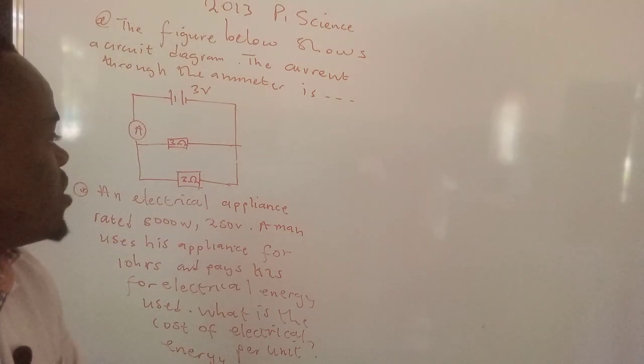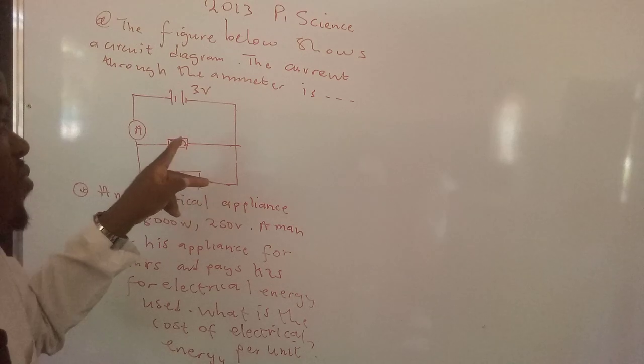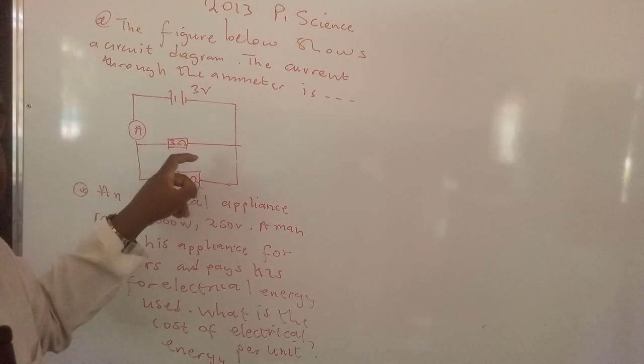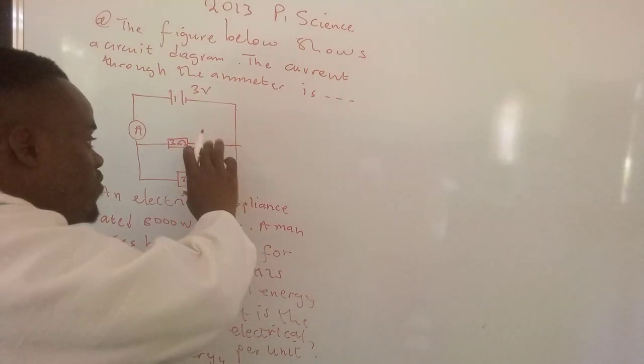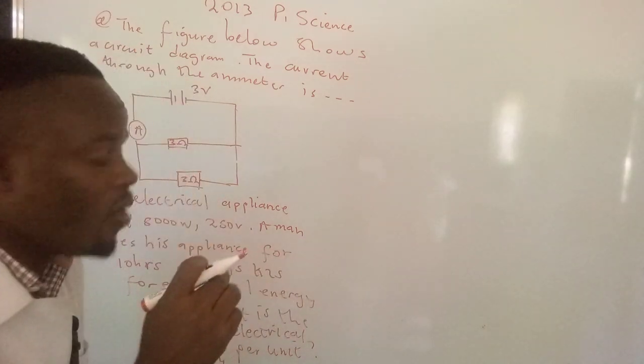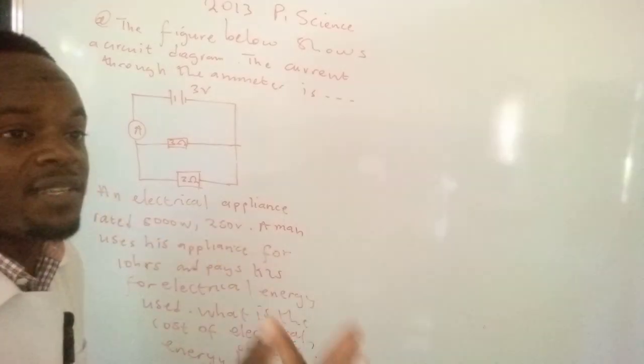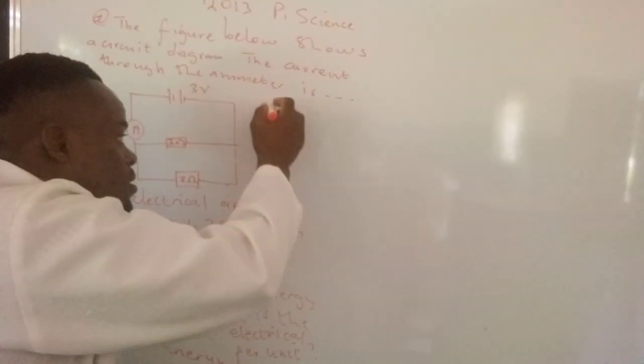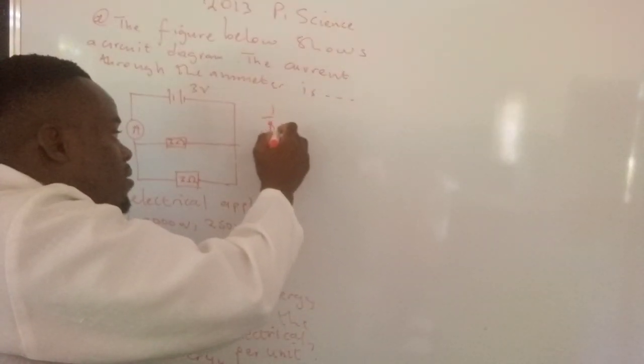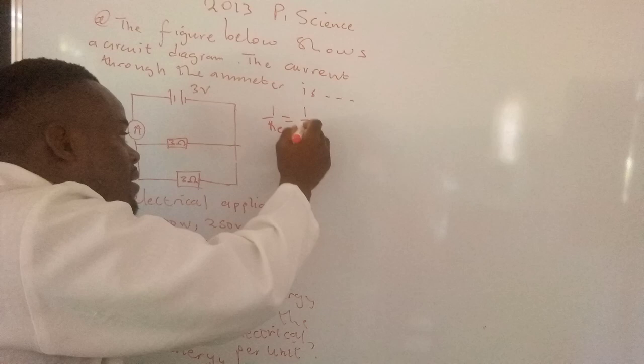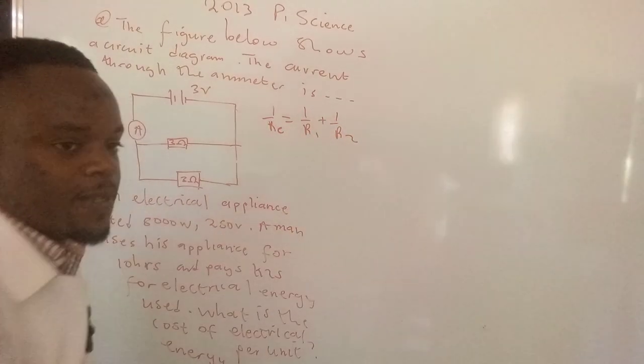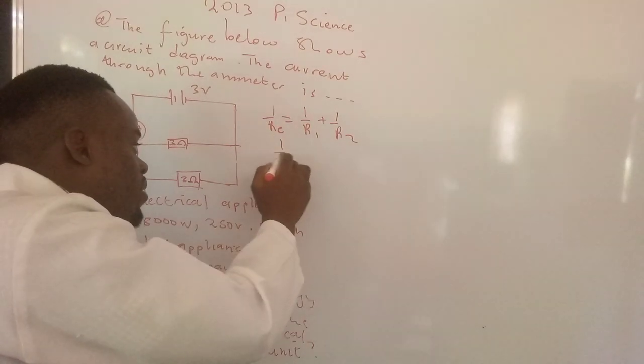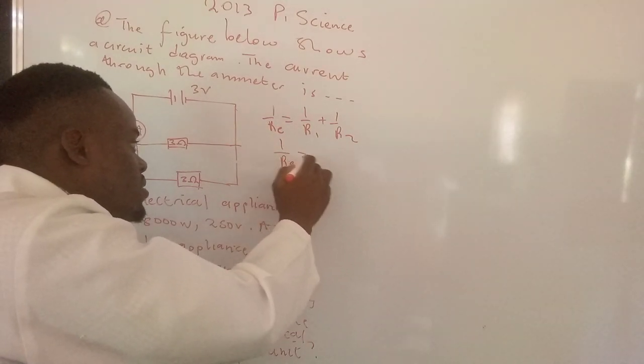Now how do you determine the current searching through the circuit? You need to find the equivalent resistor of these two resistors. You need to realize that the resistors are arranged in parallel. The formula is equal to the reciprocal of the sum of the individual resistors.